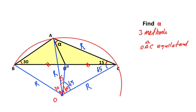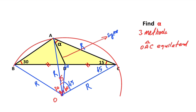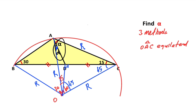Then here is 15 degrees. Notice that this triangle is an equilateral triangle and these angles are equal. Likewise these are also equal. It means this line is a symmetry line. Therefore here is also alpha, so 2·alpha equals 60 degrees.